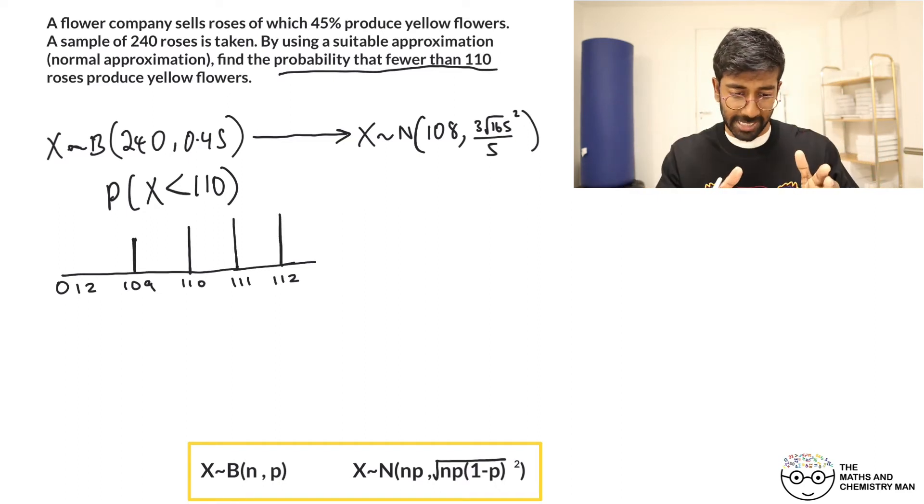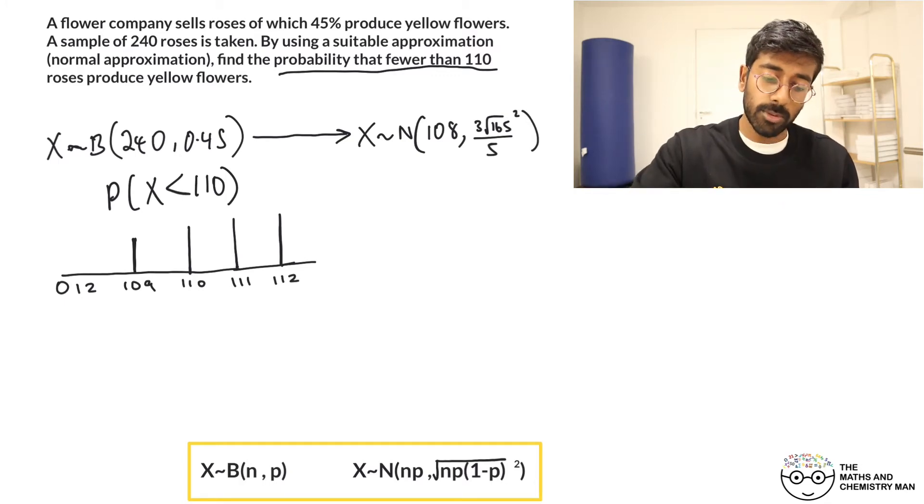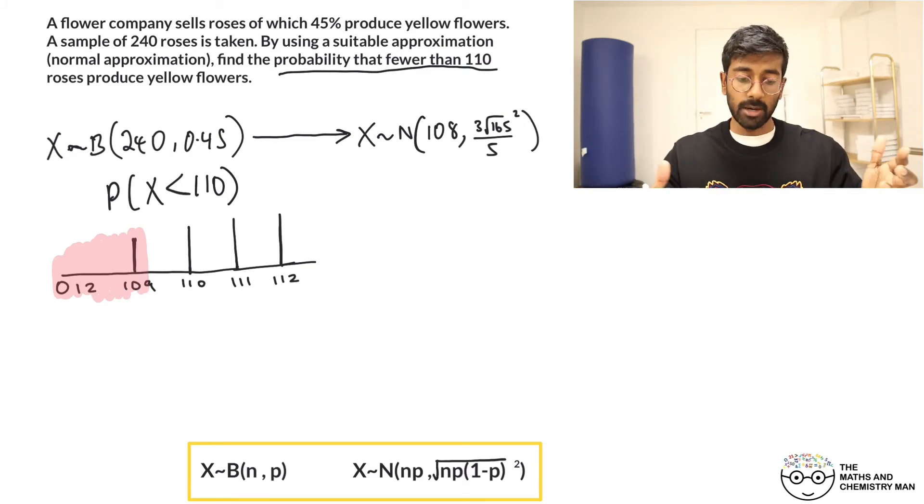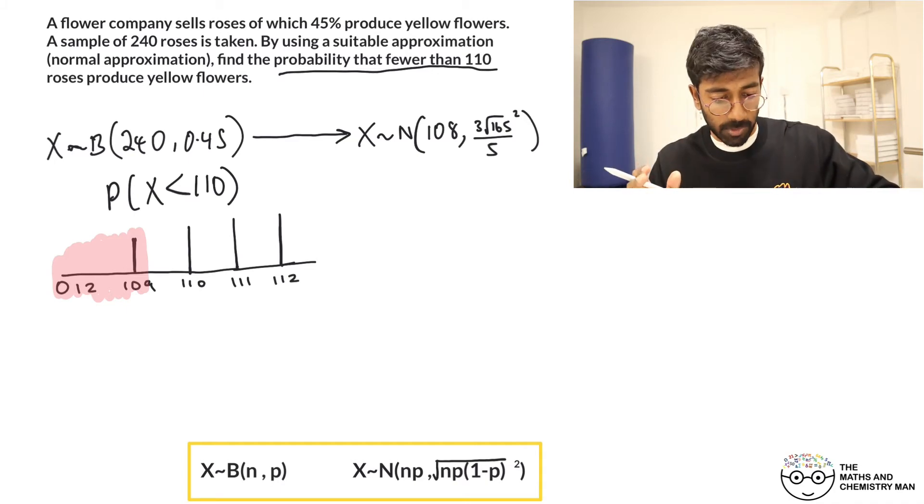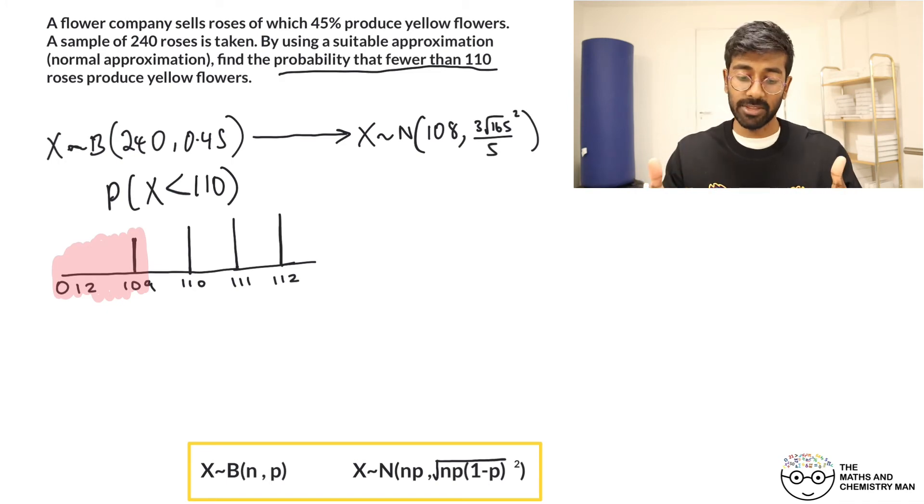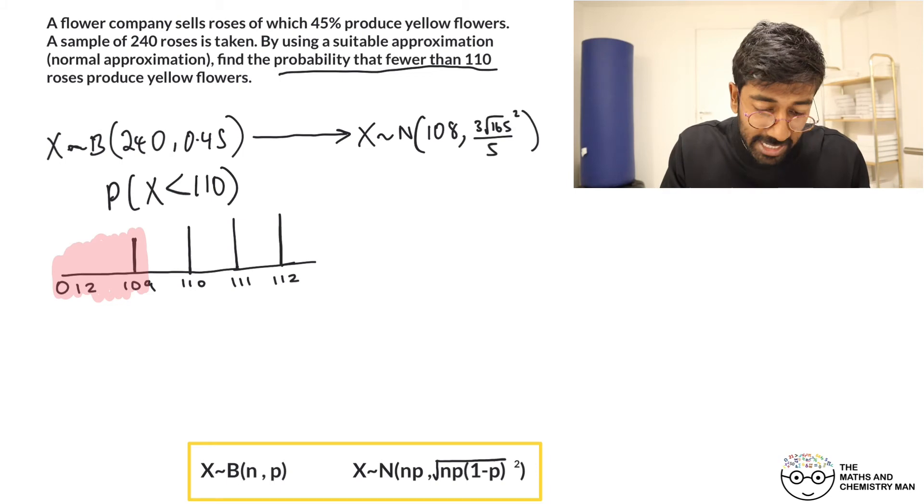So if we're looking for the probability that X is less than 110, that means we need 109, 108, all the way downwards. We need all of those there, right? So 109 all the way down to zero, we need to find all those probabilities. Now we could do that using our calculator using the binomial CD, but remember what we've done is we've now turned this into a normal distribution which is used to represent things that are continuous.